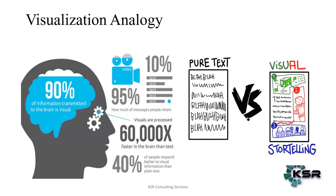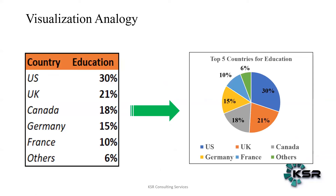Let me show you one simple visual. See both images — which one is more appealing, left or right? Automatically, the majority of people focus on the right side. The left side shows country names and education percentages just in text format, but on the right side if I ask which is the top country in education, you can easily see and answer. On the left, you'd have to go row by row. This is one key use case for visualization.